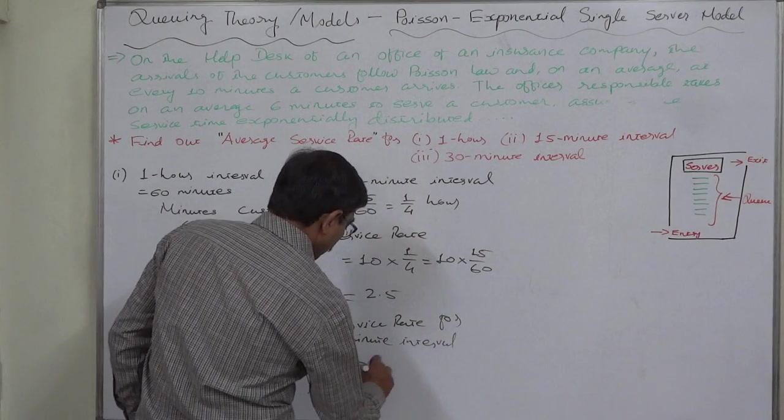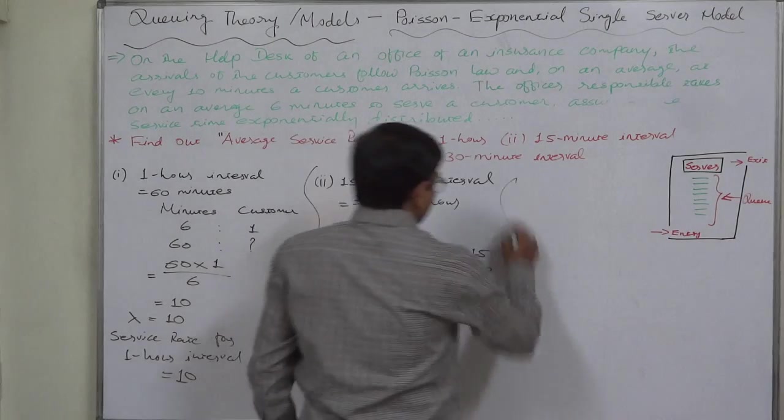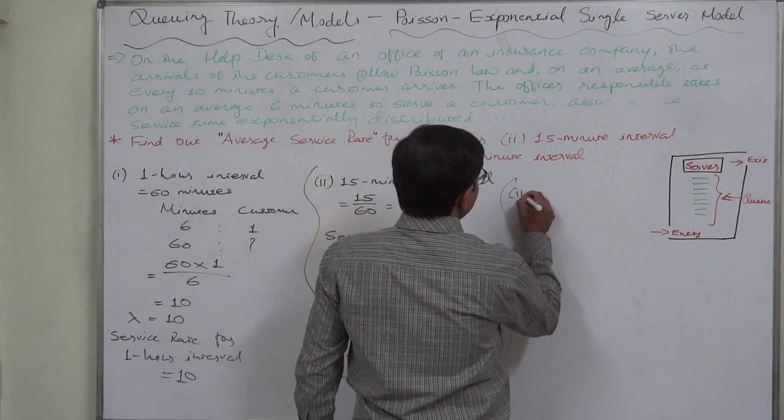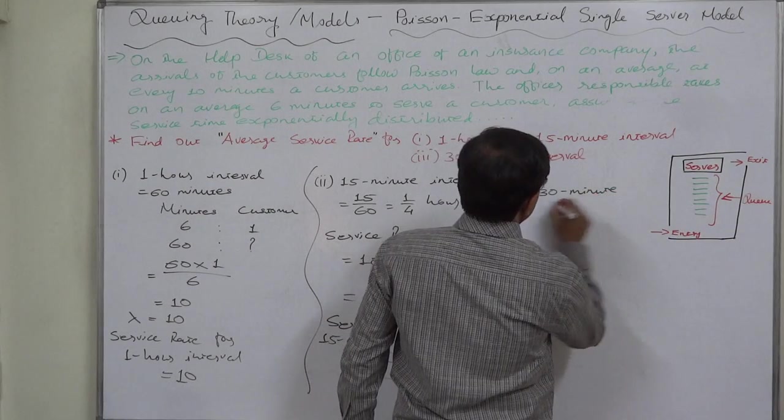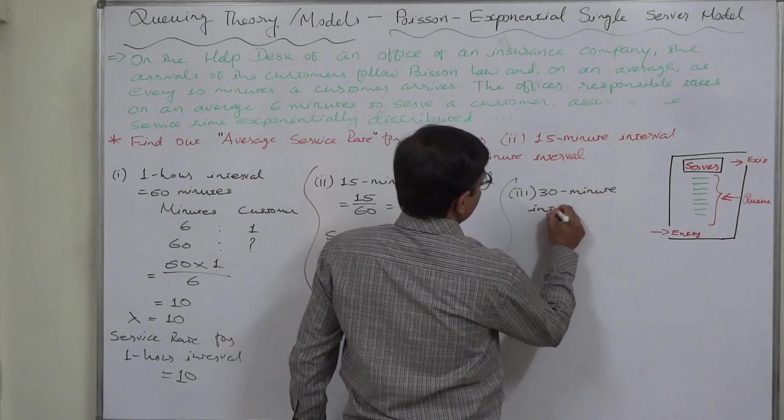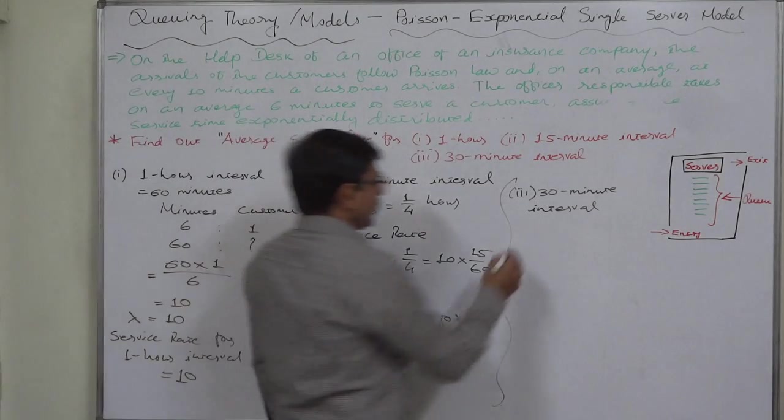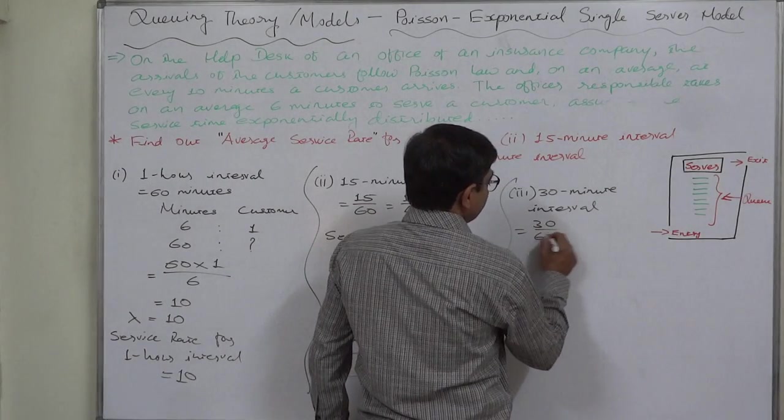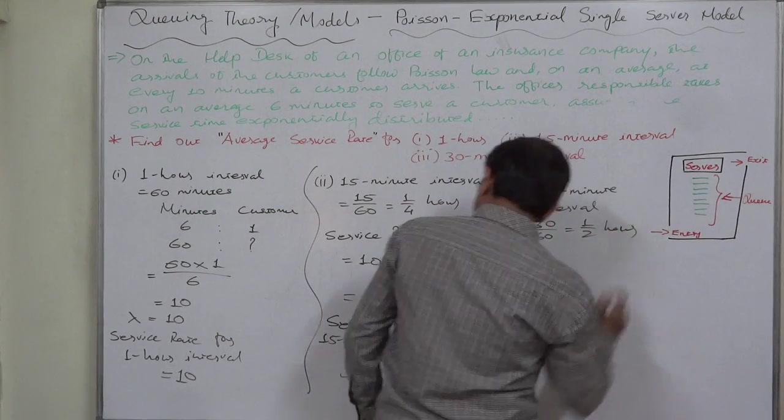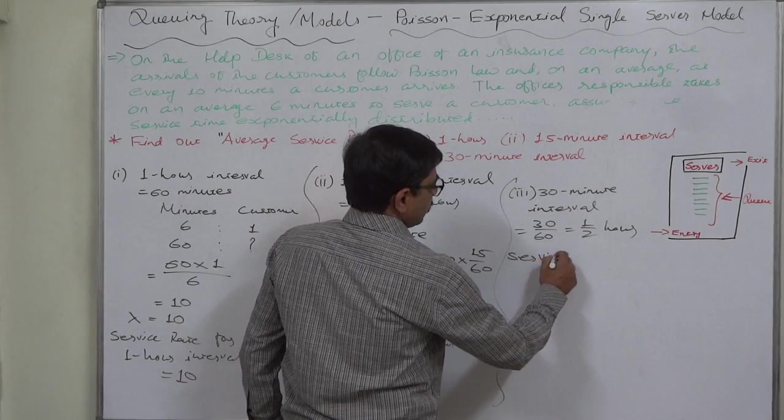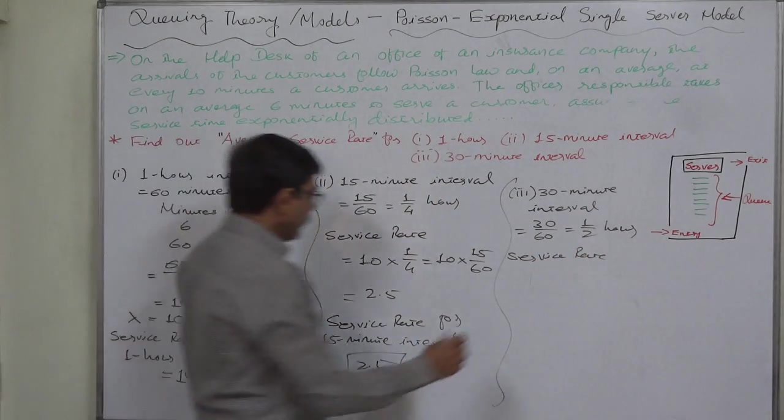Similarly, one more example of 30 minute interval. One hour is made up of 60 minutes, so 30 minute interval is 30 by 60, that is 1 by 2 or half an hour. So the service rate for 30 minute interval will be the hourly rate, 10, into half an hour.